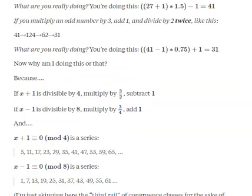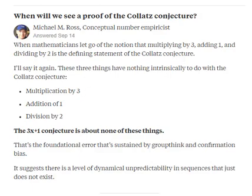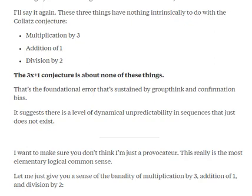I'm going to suggest that the Collatz conjecture has nothing to do with multiplication by 3, nothing to do with addition of 1, and nothing to do with division by 2. It's about none of these things.